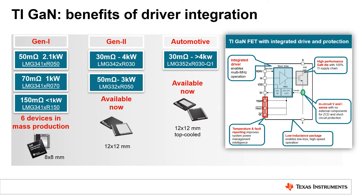Beyond the superior switching performance of GaN, TI goes one step further by integrating a silicon gate driver. This block diagram shows both the high-voltage GaN FET as well as the low-voltage silicon gate driver. The combination of these technologies enables optimal performance. Not only does this partitioning optimize switching and minimize power loss, it also enables a variety of performance and protection benefits by monitoring voltage, current, and temperature. TI has a complete roadmap of integrated driver devices from 30 milliohm to 150 milliohm. Packaging innovation is also important to improve thermal management for high-density systems, with new products including lower on-resistance for higher power levels, including the first automotive topside cool device.